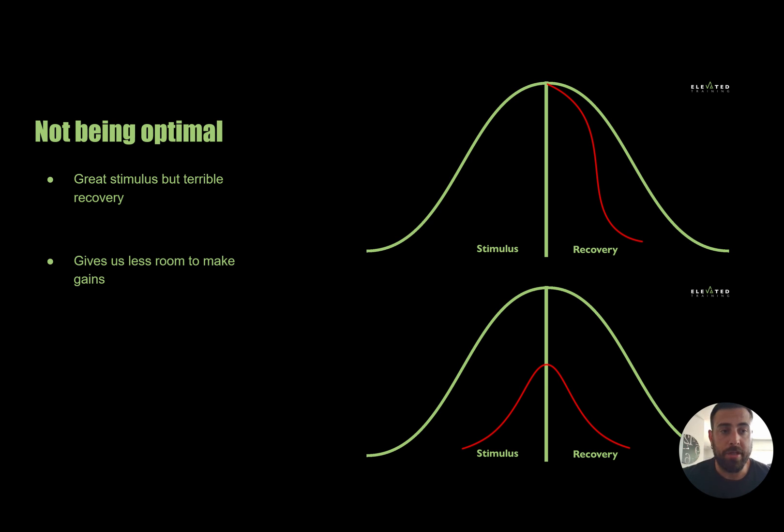Now if we want to go a step further and say the programming is just complete garbage and they're just taking guesses on what to do, don't know what sets and reps do what, don't understand the physics and principles that we have to apply to be able to create a good program, then we get the bottom bell graph. So a terrible stimulus and a terrible recovery - yeah, you're probably going to make a little bit of progress there and see some changes, but is that really everything that you could be getting out of what you're doing?